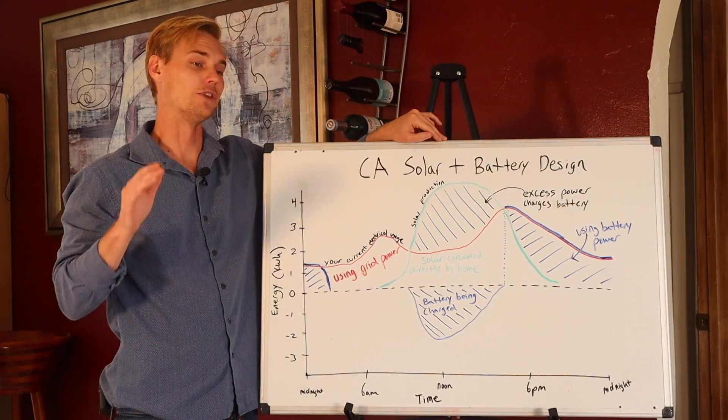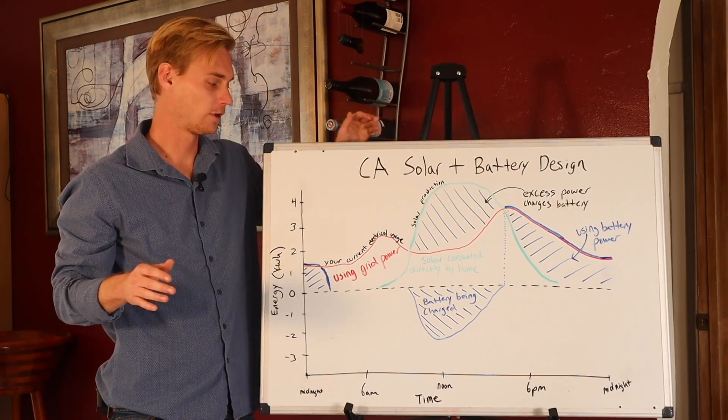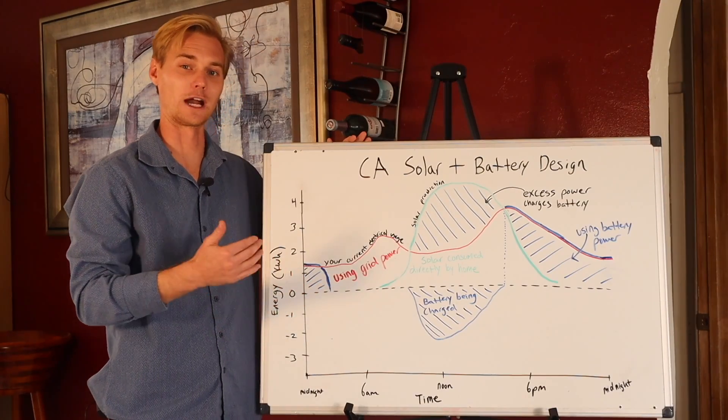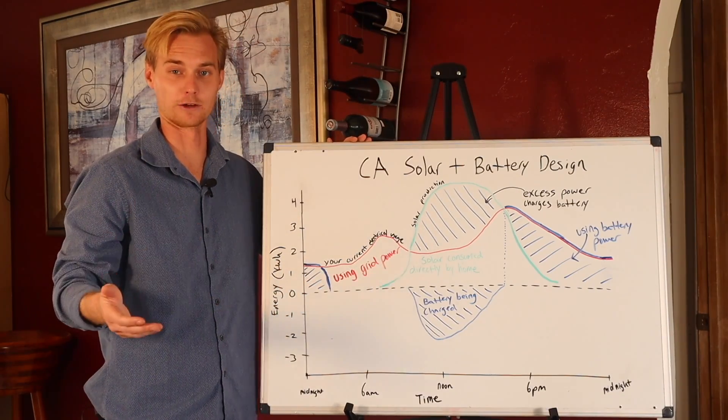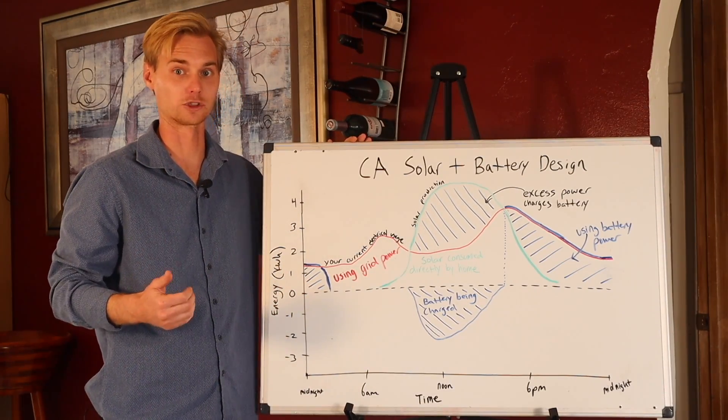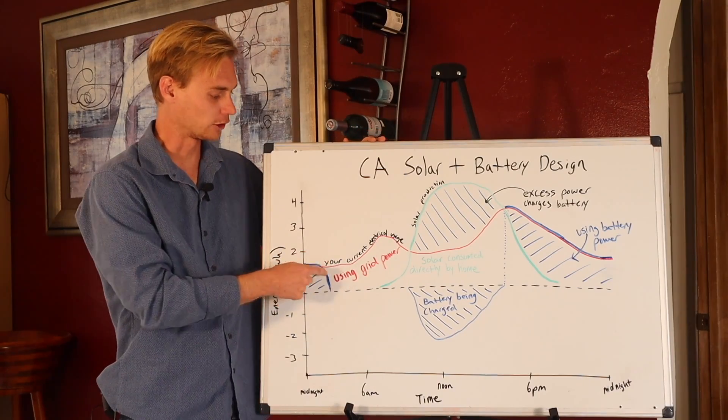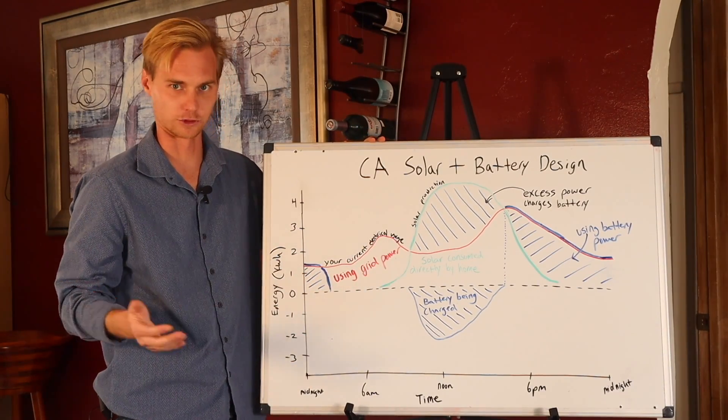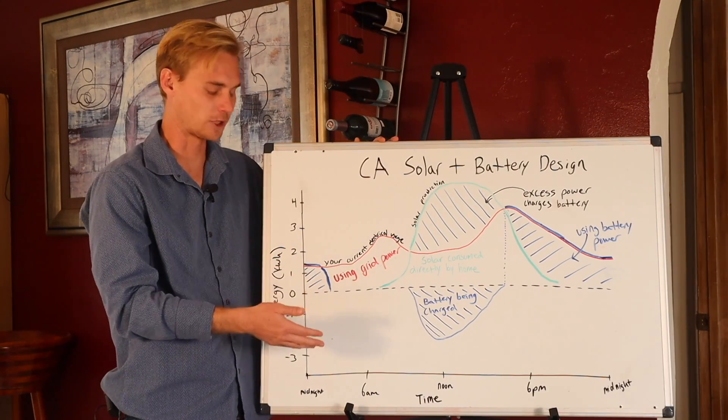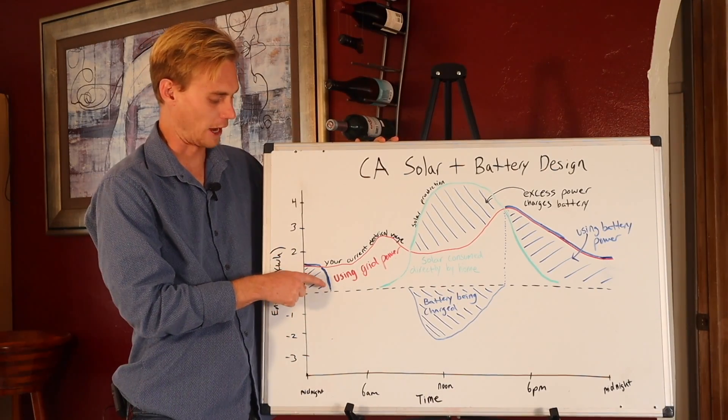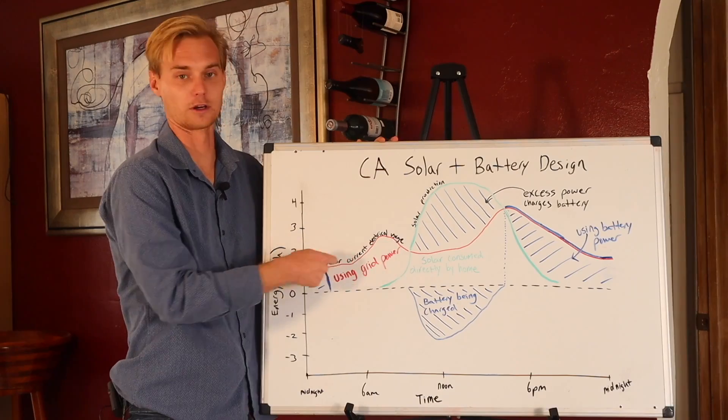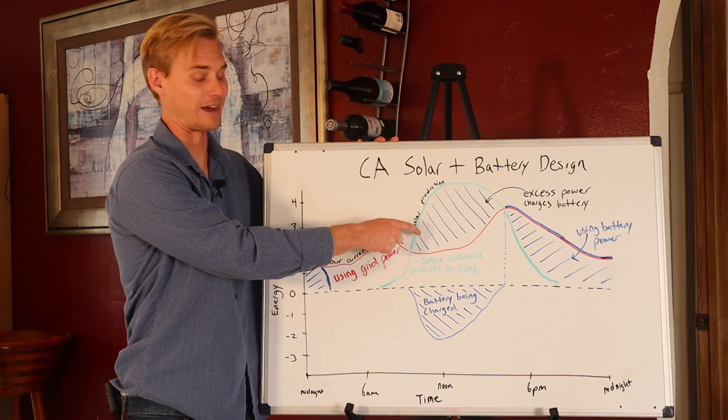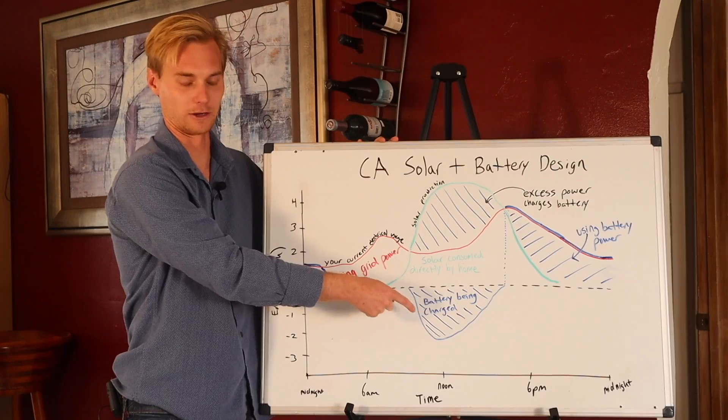The amount of batteries you have is going to determine how late through the night you're actually going to be able to use your batteries before you're back on the grid power. So in this example, I actually left a time, probably 2 a.m. or so. Sometime in the middle of the night here, the battery is going to essentially die, and you're going to be on grid power again, until we get to the point in the daytime where we have excess again to charge the battery.